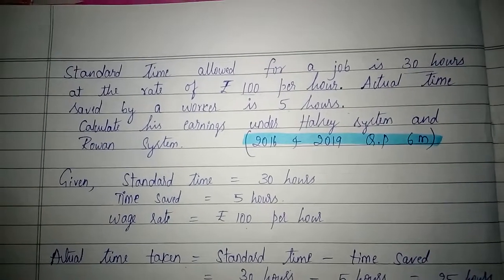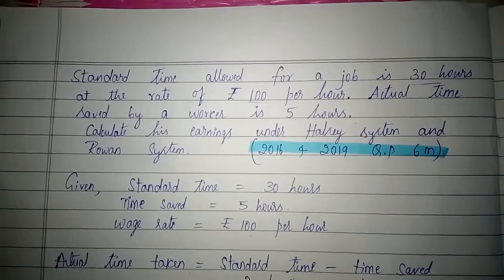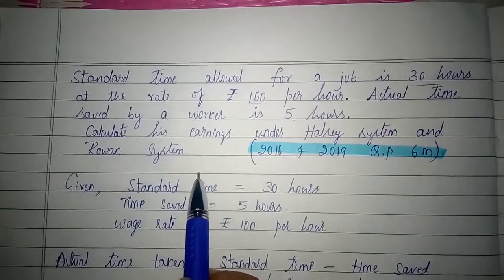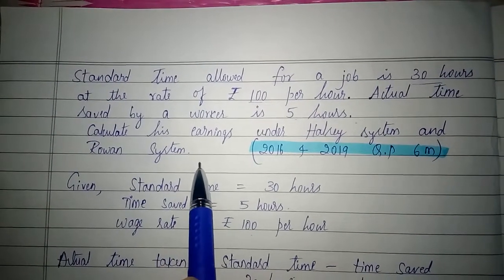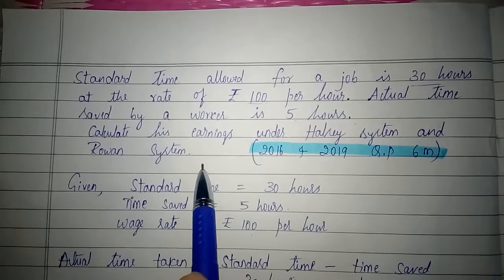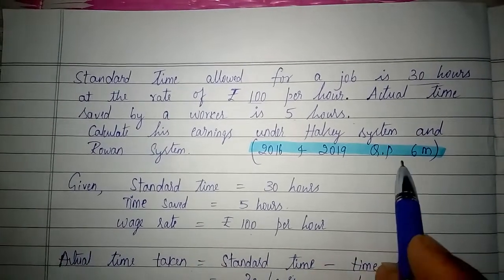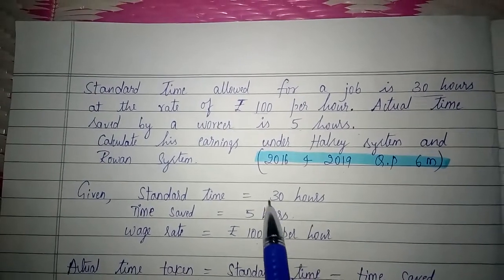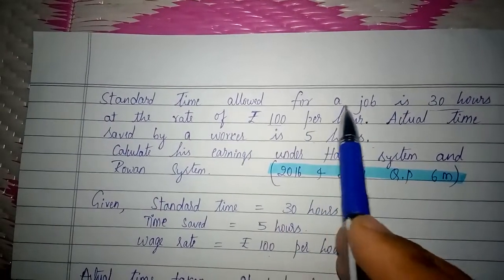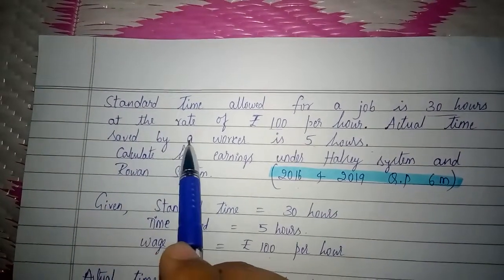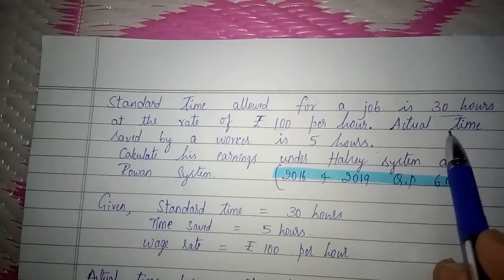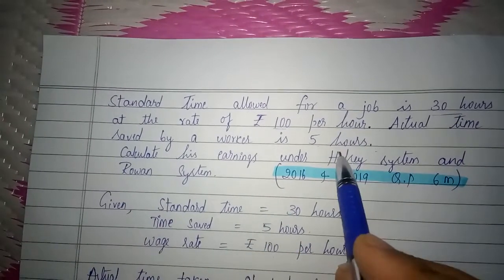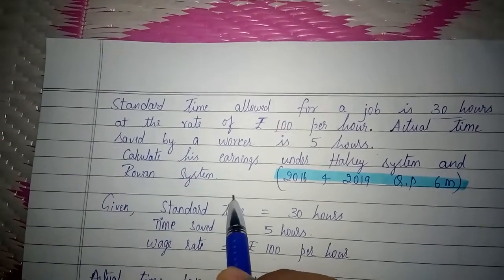Hello students, in this video let us learn how to calculate the earnings of the worker under Halsey system and Rowan system. This is the problem which was asked in the Bangalore University exam for six marks in 2016 and 2019. Here in this problem they have given: standard time allowed for a job is 30 hours at the rate of rupees 100 per hour, and actual time saved by the worker is 5 hours. Using these three pieces of information we need to determine his earnings under Halsey system and Rowan system.